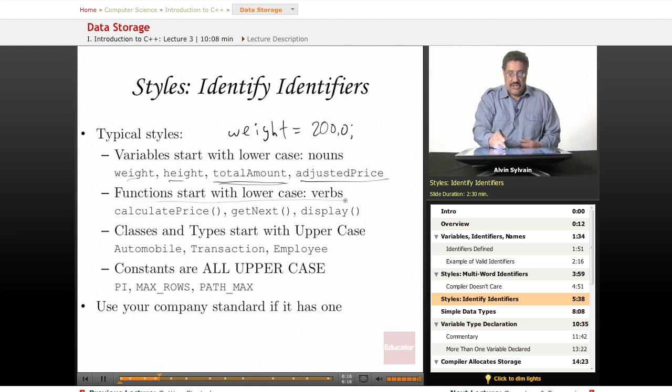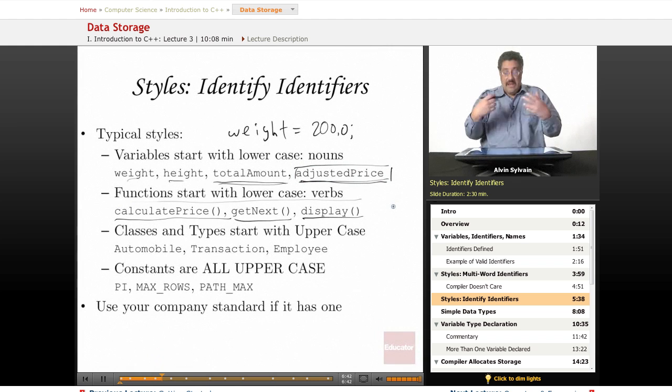Very often you write functions and you'll start those with a lower case. And they will be verbs because the function is doing something. We want to calculate the price, that's a verb. We want to get the next object. You want to display something on the screen. So your variables that contain data tend to be nouns. Your functions that do something tend to be verbs. Not always, it's just a tendency.